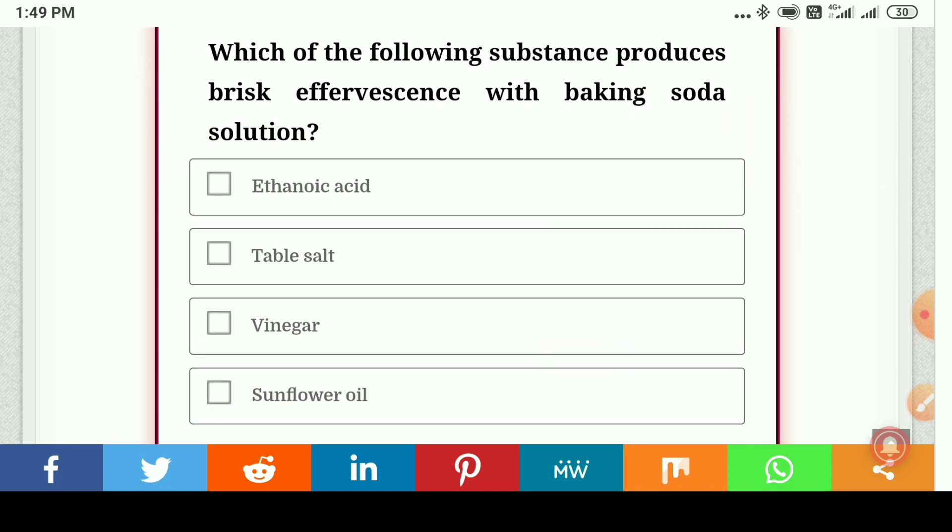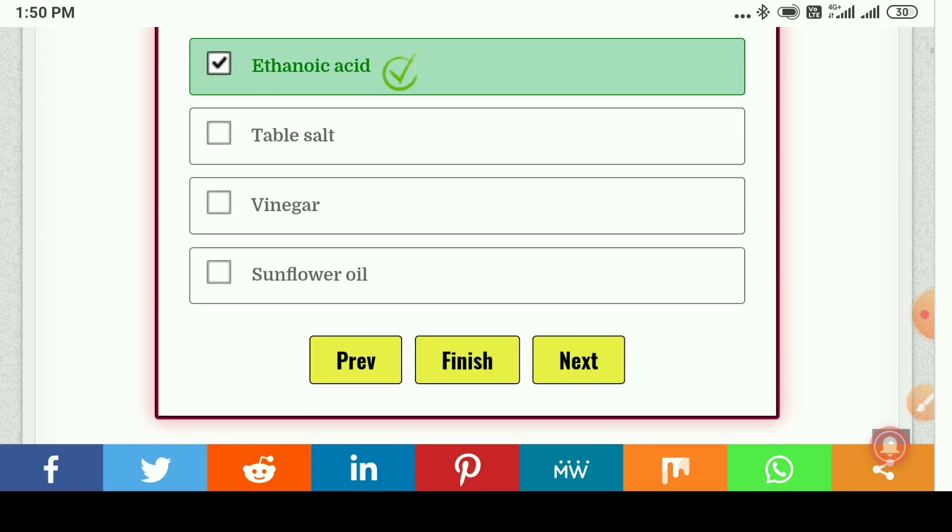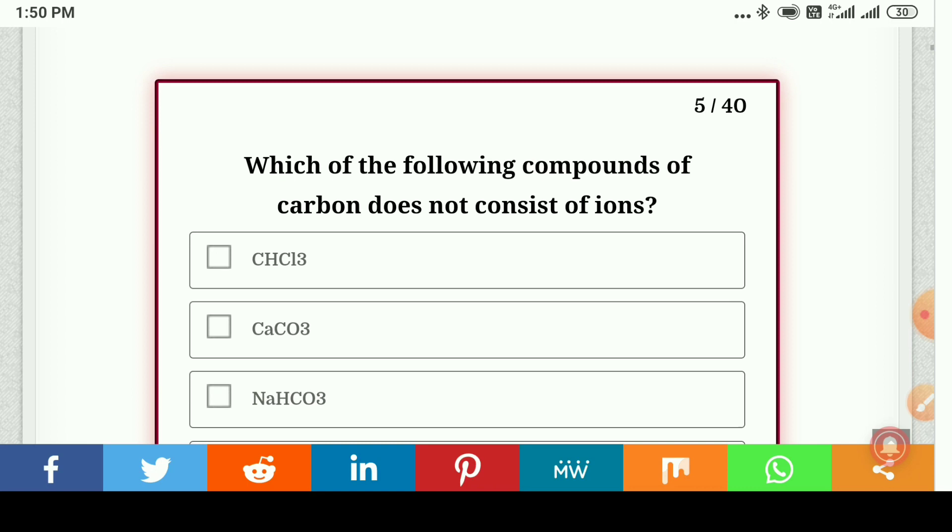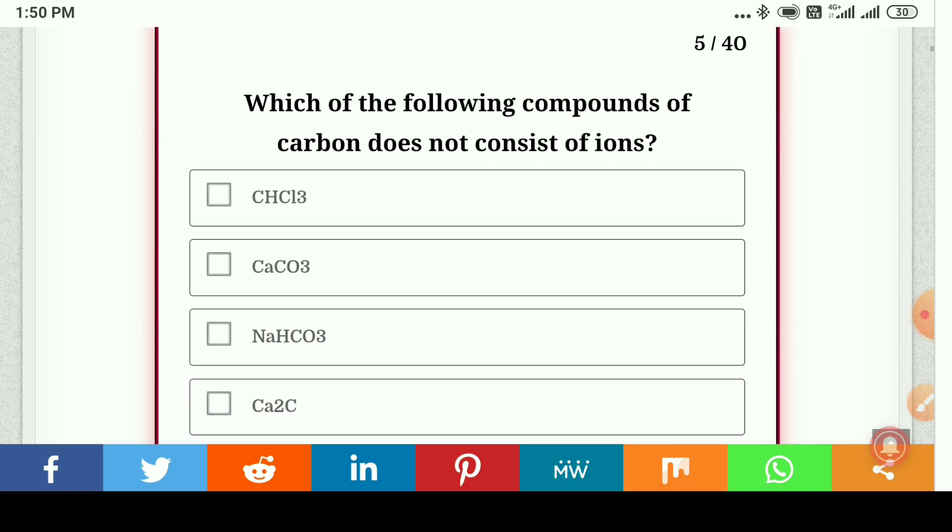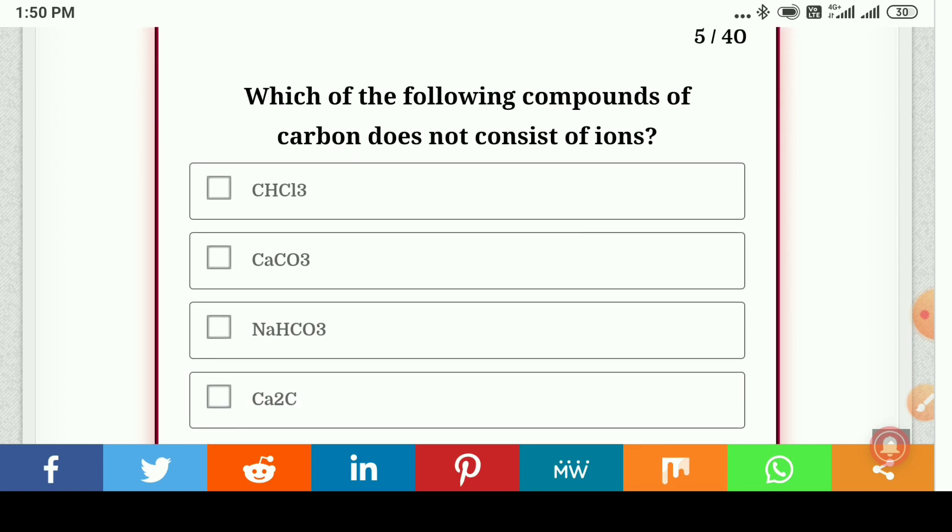Which of the following compounds of carbon does not consist of ions? So here is answer A, the correct answer.